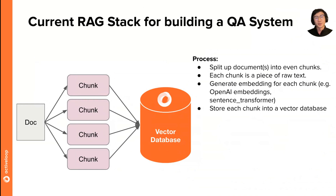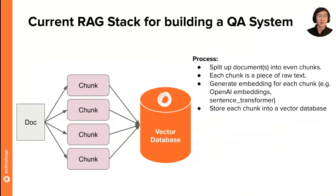Data ingestion means that you take an input document and split it up into a set of chunks, where each text chunk is a piece of text. Then you want to generate an embedding for each chunk — for instance, using an embedding model like OpenAI embeddings, Hugging Face Sentence Transformer models, or any of the other state-of-the-art embedding models. Then you take each text chunk along with metadata and the embedding, and store that into a vector database like ActiveLoop.